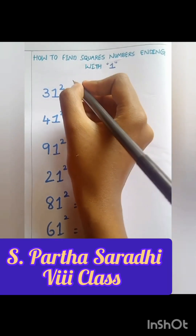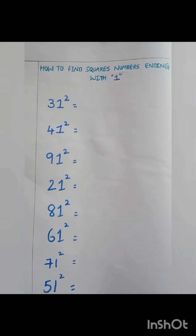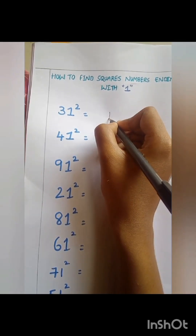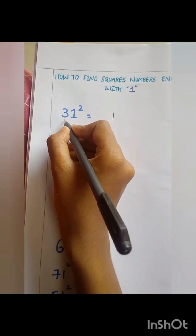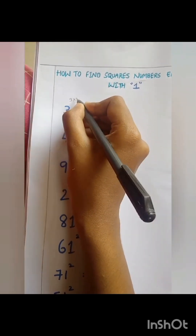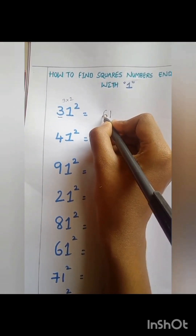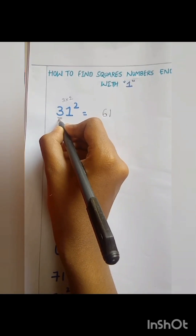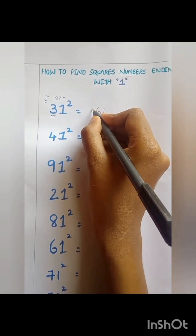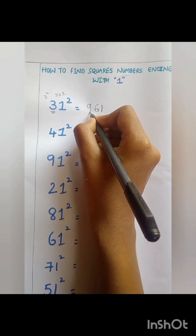The next example is 31 squared. As we know, the unit digit will be 1. Then 3, we should multiply with 2 — the tens place number — that is equal to 6. And now we should square the tens place number, that is equal to 9. So we get 961, that is equal to 31 squared.